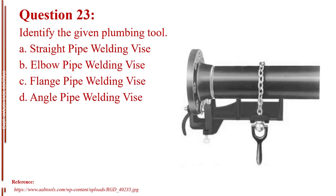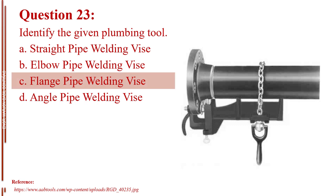Question number twenty-three. Identify the given plumbing tool. Letter A, straight pipe welding vise. Letter B, elbow pipe welding vise. Letter C, flange pipe welding vise. Letter D, angle pipe welding vise. The answer is Letter C, flange pipe welding vise.